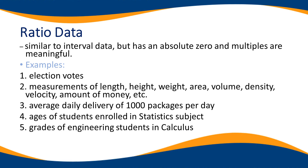Ratio data is similar to interval data but has an absolute zero and multiples are meaningful. Examples include election votes, teacher-to-student ratio — if we have a ratio of one is to 40, meaning one teacher is equivalent to 40 students — and average daily delivery of 1,000 packages per day, giving a ratio of one is to 1,000. Another example is the ratio of male against female — according to research, the ratio is one is to three, meaning one male for every three females. And these are the basic ideas about data management or statistics.